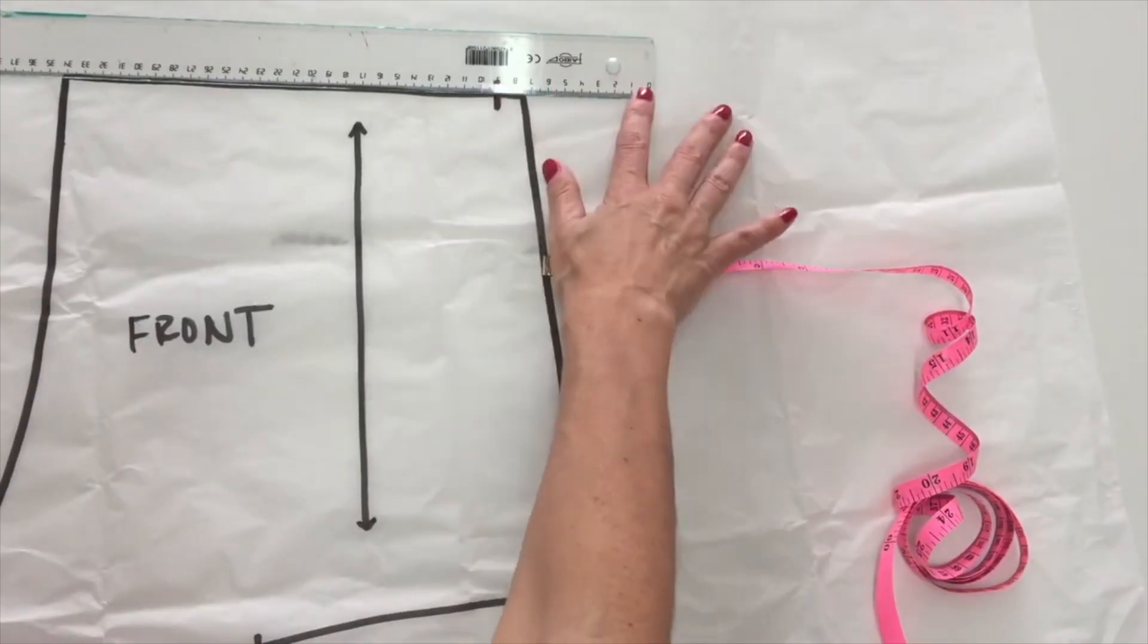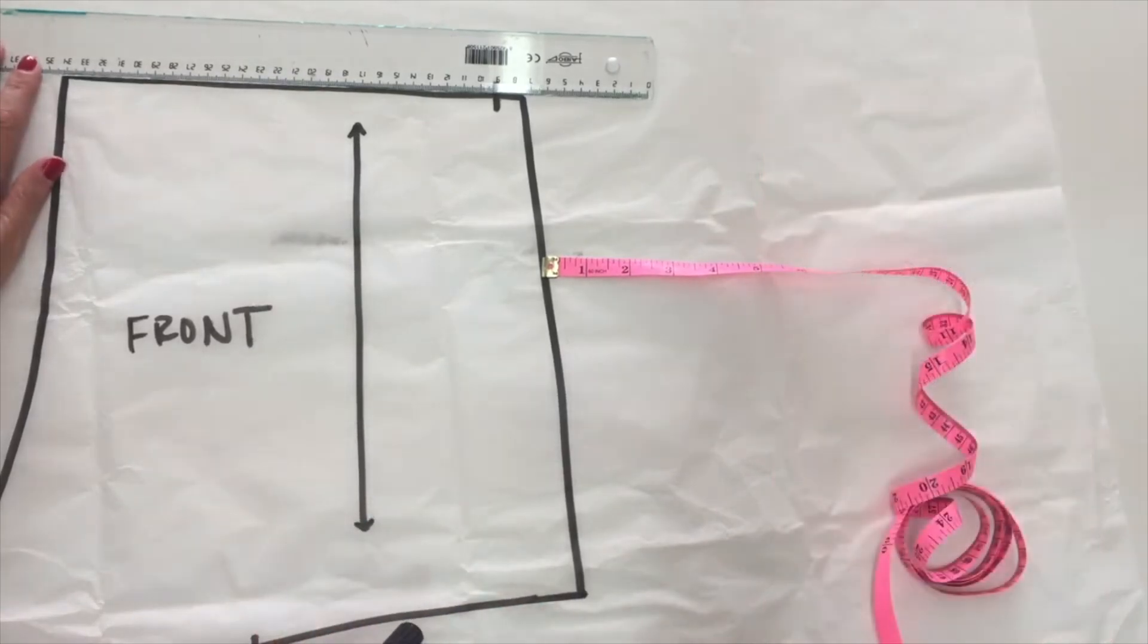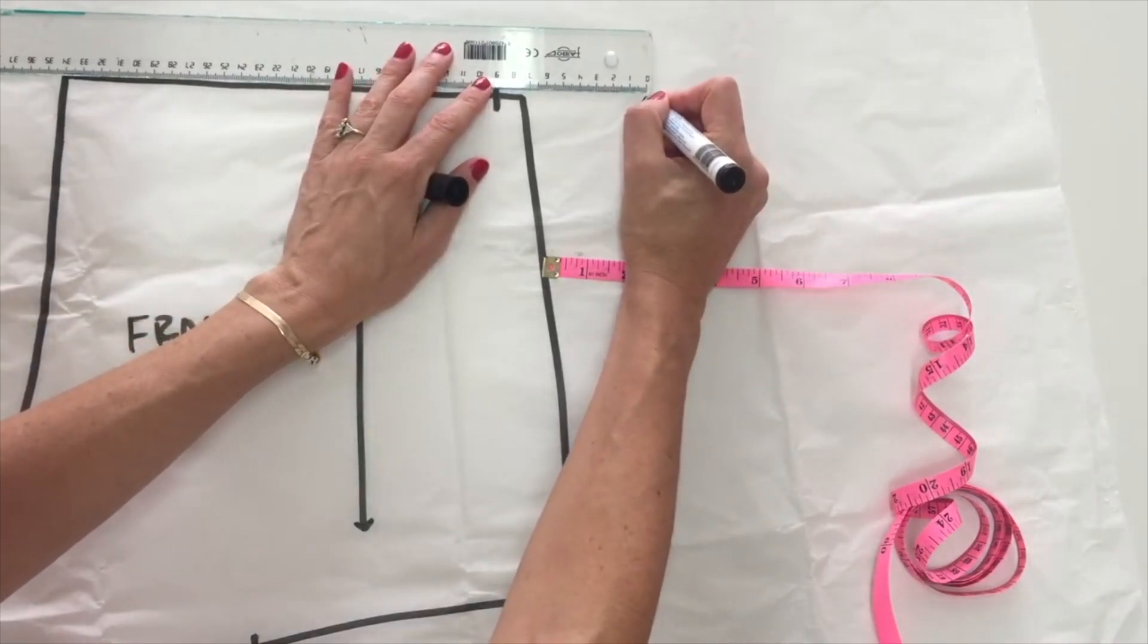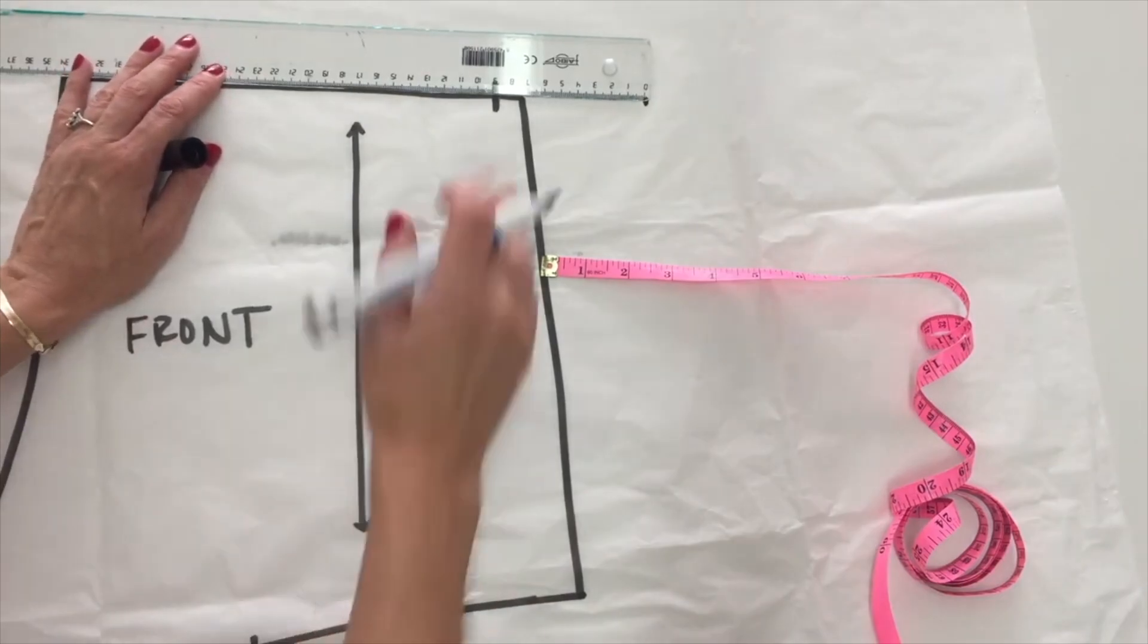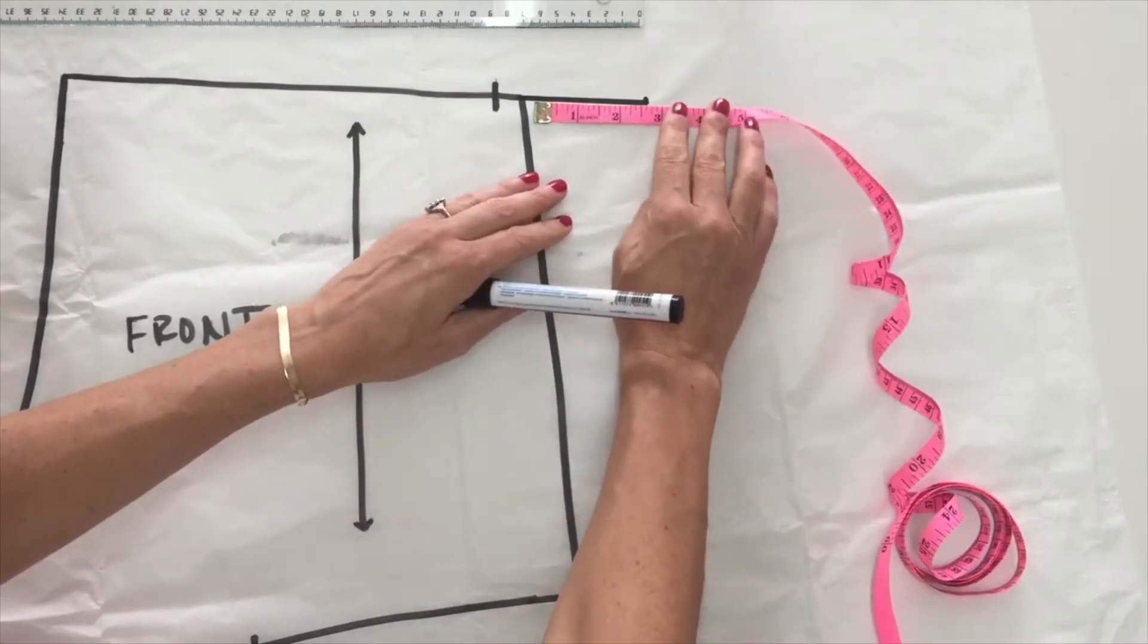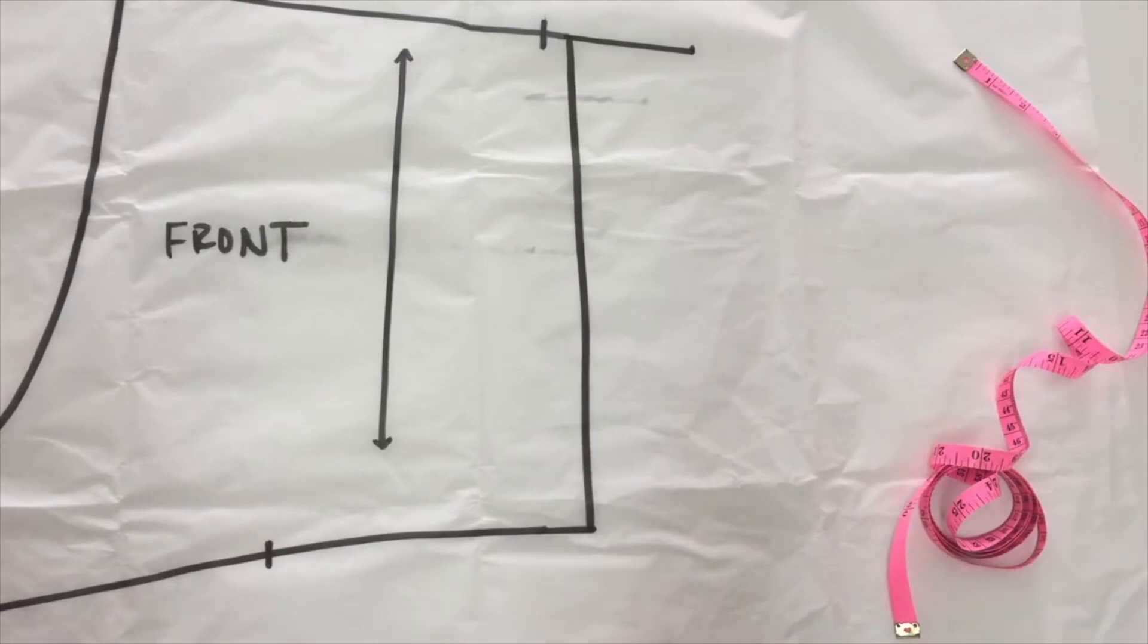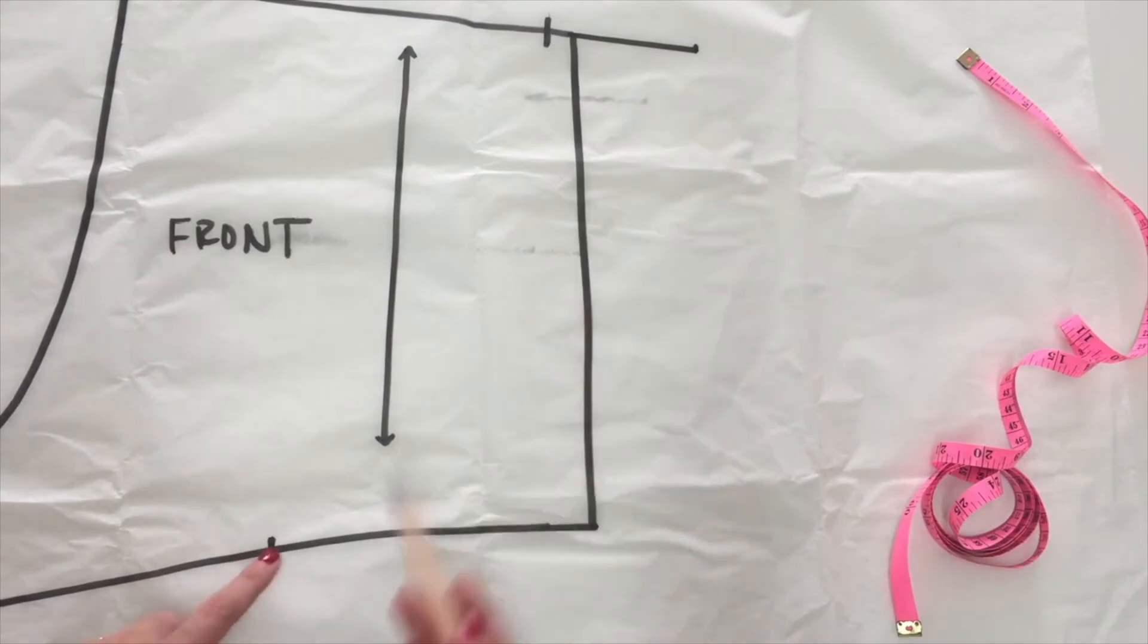But first we have to mark our front pattern piece. So with the front, we're going to extend our waistline three inches, which is about seven and a half centimeters. So I'm going to do the same thing that I did with my back. I'm just going to make a marking at the seven and a half centimeters or three inches, just right out from my waistband or my waistline. And then I will connect this line, just extending our waistline out. So there is our new marking. So that is three inches, seven and a half centimeters.